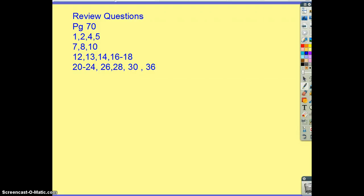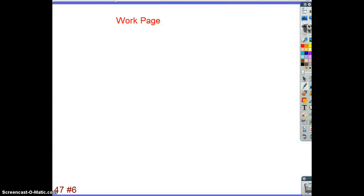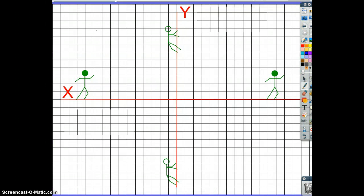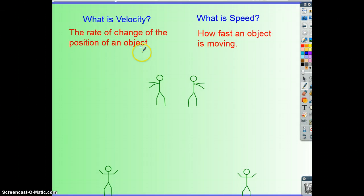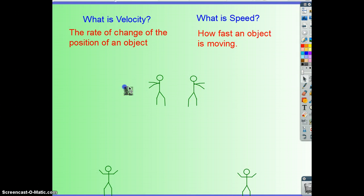Number five: the average velocity of a duck is zero in a given time interval — what can you say about the displacement? If average velocity is zero, we can safely say displacement must also be zero. To get a velocity of zero, your displacement must end up being zero, meaning you either did nothing or you came back to your starting point.